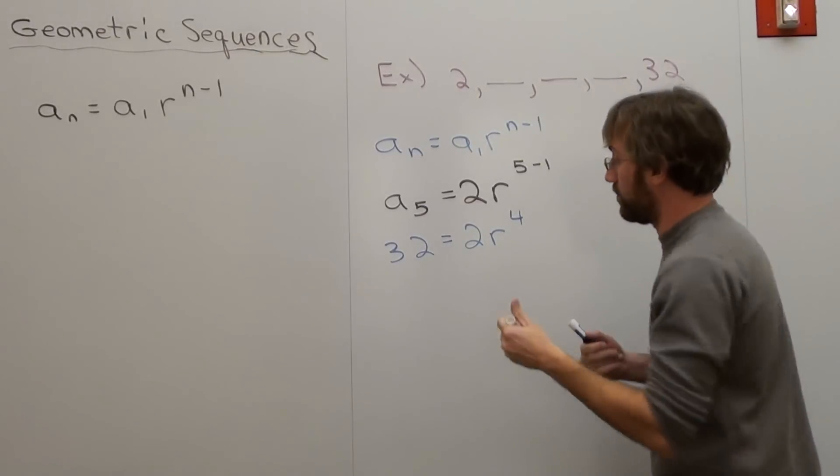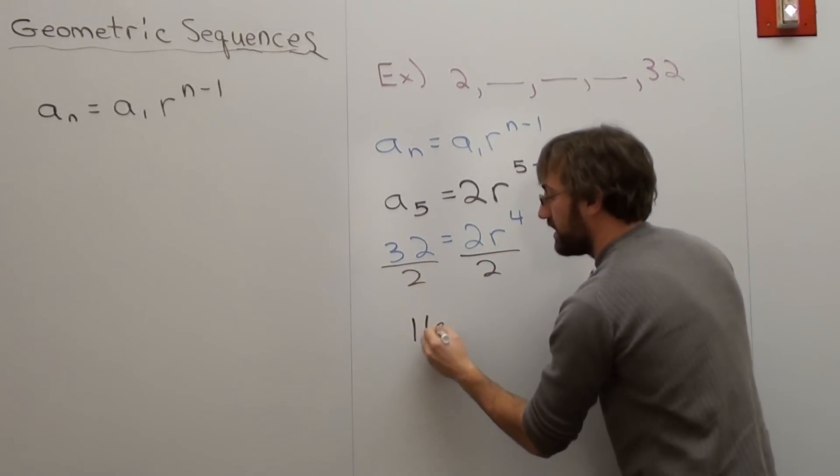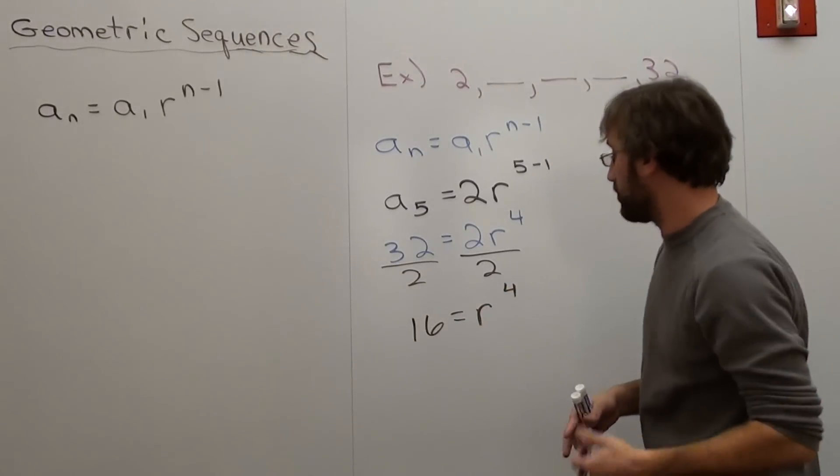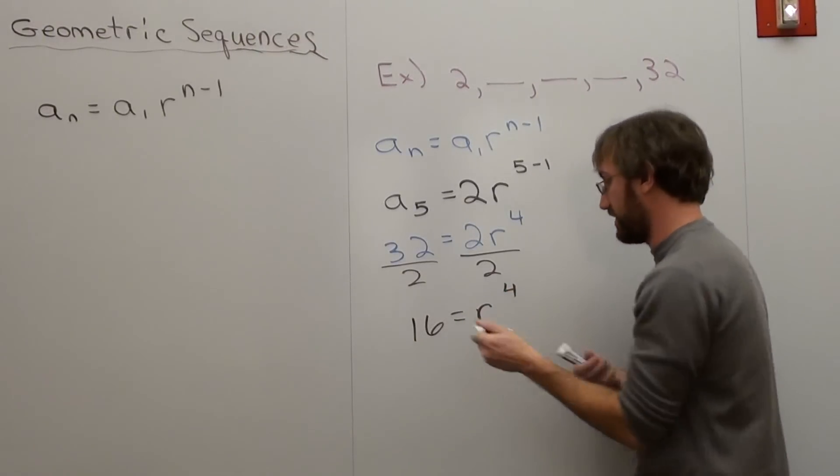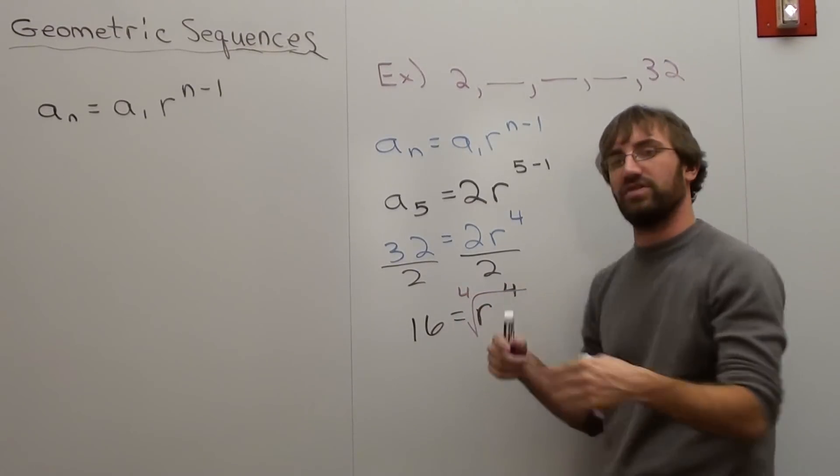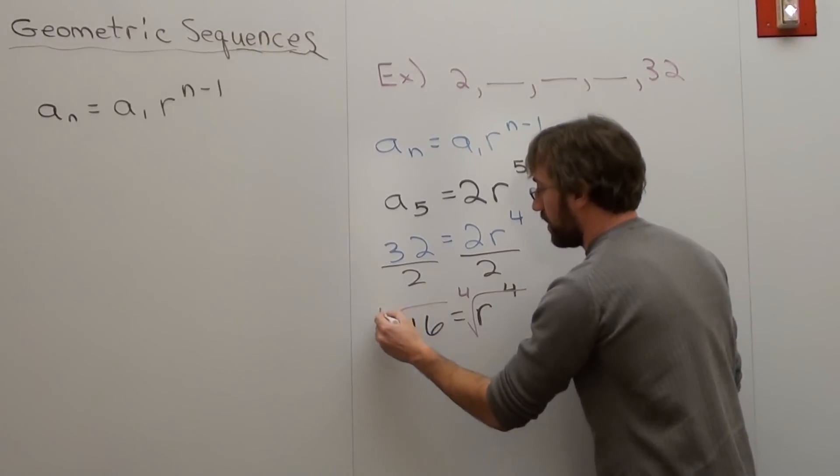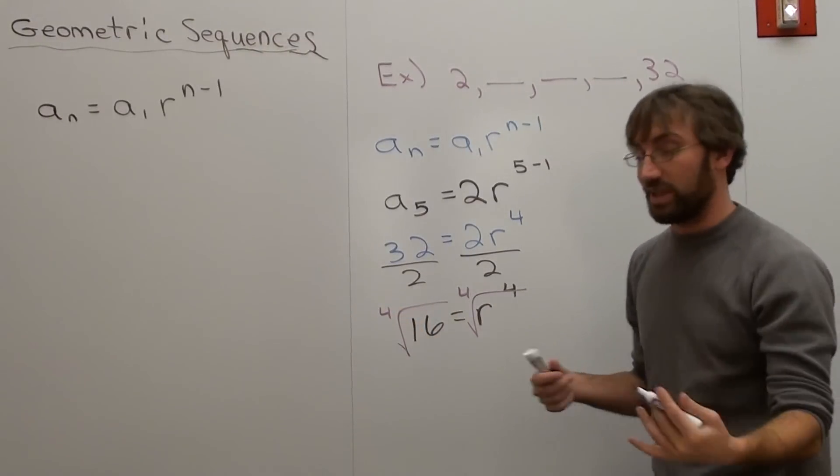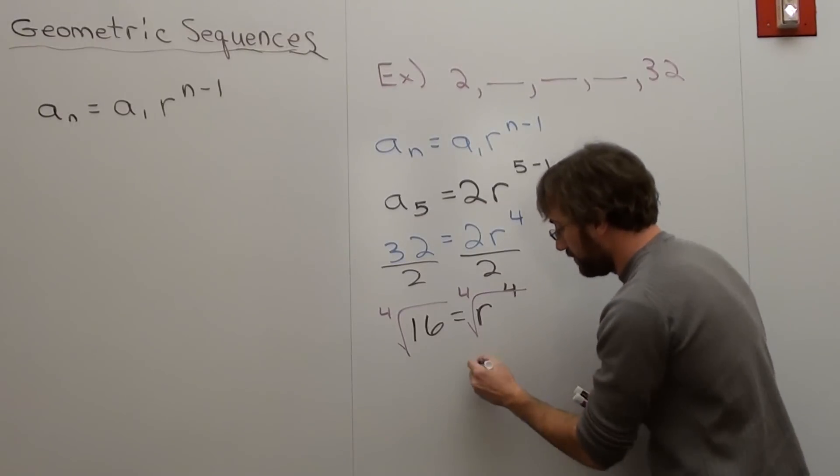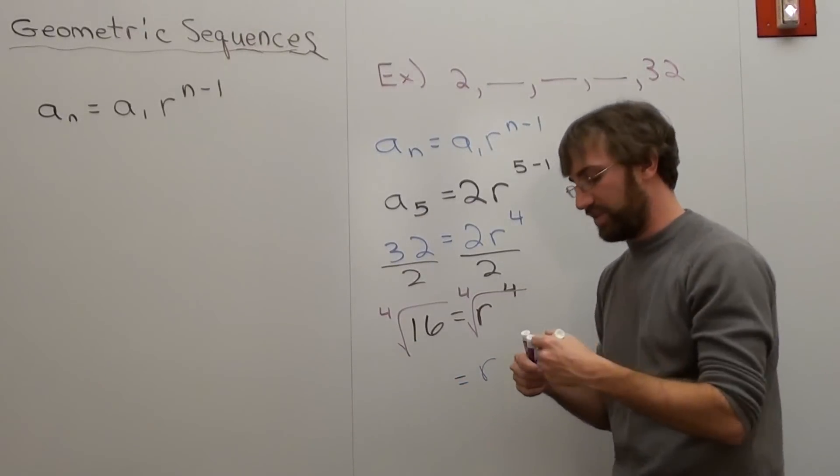Now, what you do here is you divide by 2, and you get 16 equals r to the fourth. If you want to figure out r, what you do is you take the fourth root on this side. If it's r squared, you take the square root. But if it's r to the fourth, you've got to take the fourth root. So basically, and this problem does come out pretty easily, what number times itself times itself times itself is 16? Well, 1 times 1 times 1 times 1 is 1. 2 times 2 is 4 times 2 is 8 times 2 is 16. So the answer is 2.